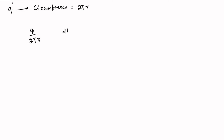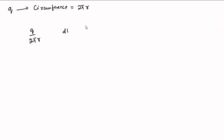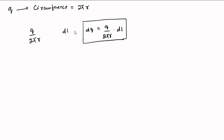In a small element of length dl of the ring, the charge present is dq = (Q / 2πr) · dl. This is the small amount of charge present in the length dl.